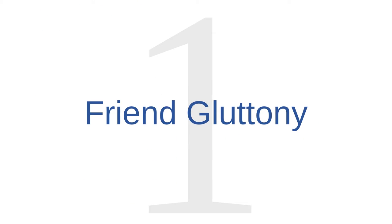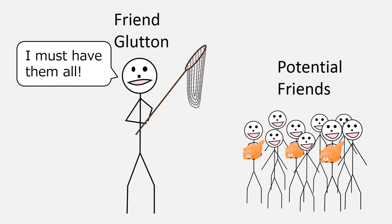Social media privacy issue number one is friend gluttony. Some people strive to have as many friends or followers on social media as possible. When friending goes too far, we call this friend gluttony. On social media, members of your social network are sometimes called friends. In the real world, we usually mean something different when we talk about friends than what we mean when we talk about friends on social media.